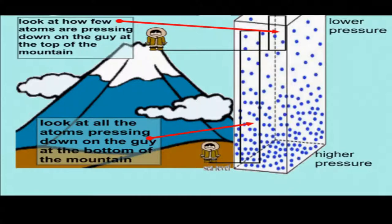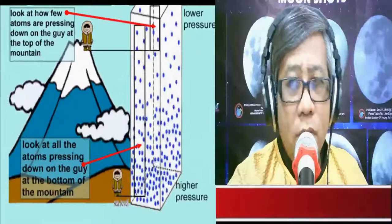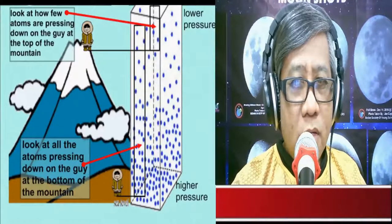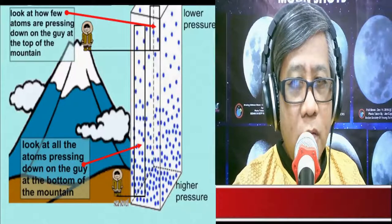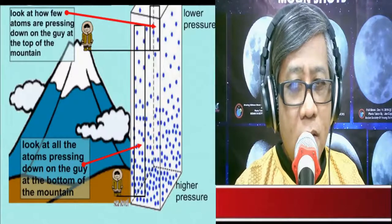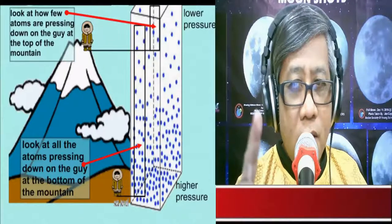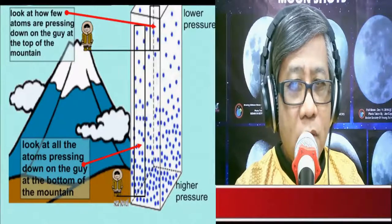Compared to the guy on top of the mountain, there are fewer air molecules pressing down on him, so he experiences lower air pressure. The guy at the base of the mountain experiences higher air pressure because there are more air molecules pressing down on him, while on top of the mountain there are fewer air molecules.